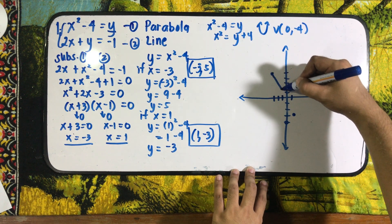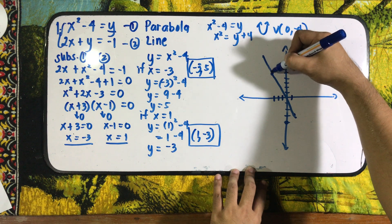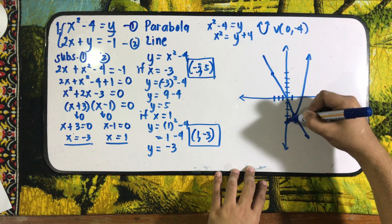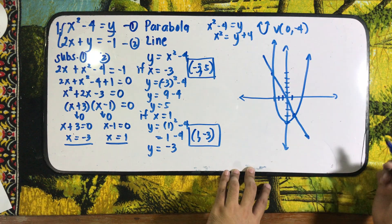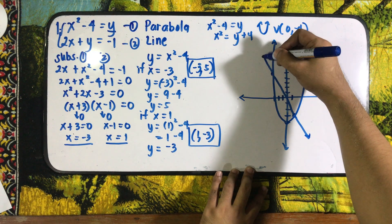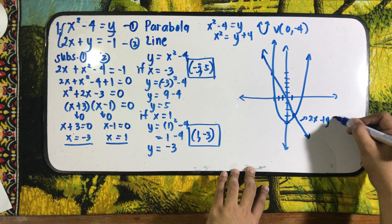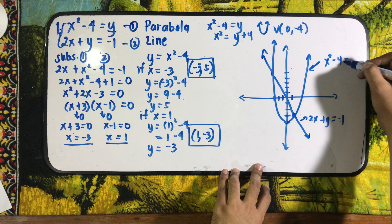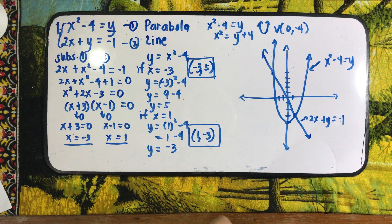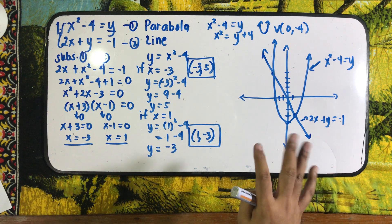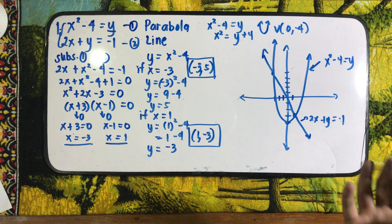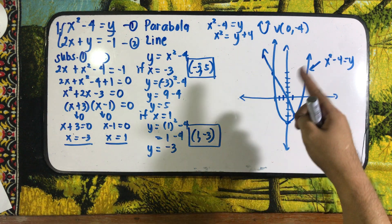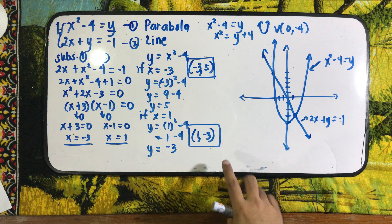Let us draw the line and the parabola opening upward. The equation of the line is 2x plus y equals negative 1, and the equation of the parabola is x squared minus 4 equals y. Remember, the solutions are just the intersections of the graphs of the given equations. In order to solve systems of equations, we can use elimination, substitution, or graphing.